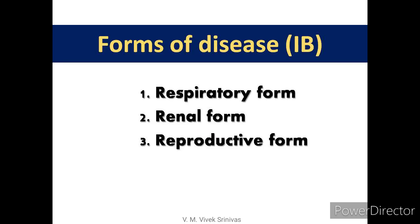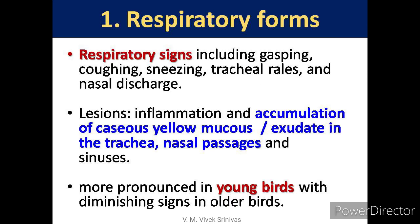There are three forms of infectious bronchitis: respiratory, renal, and reproductive. In the respiratory form, birds show signs including gasping, coughing, sneezing, tracheal rales, and nasal discharge. On post-mortem, inflammation and accumulation of caseous yellow mucous exudate in the trachea, nasal passages, and sinuses will be observed. This form is more pronounced in young birds with diminishing signs in older birds.